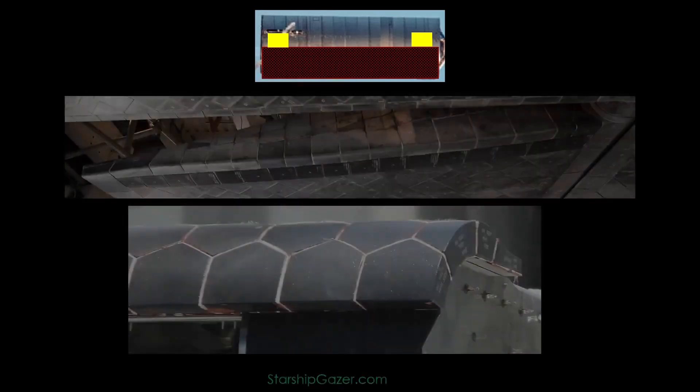The fins do, of course, make our heat shield harder. We need to deal with more complex curves, but that's a solvable problem. We'll just need to get more complex with our tile shape.